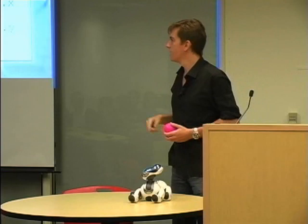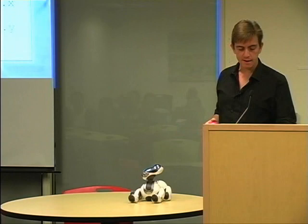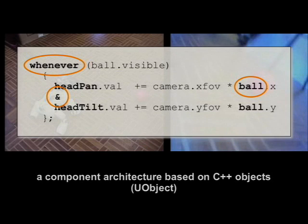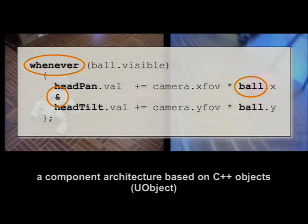The third important thing is that the language is extendable with clear connections to C++. If you look at the ball object, it's written in C++. You write the C++ vision algorithm to detect the ball in the image, compile it with UObject — inherit from UObject and make one or two changes in the constructor — and then plug it into Urbi. You can also run it as a remote process connecting over the network, transparently. You don't know whether Ball is inside the robot or running on a remote computer.